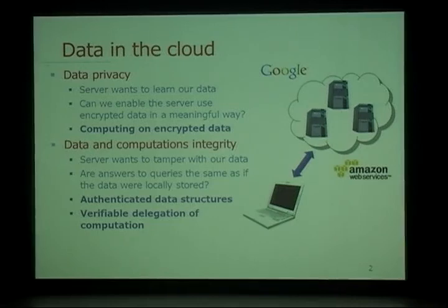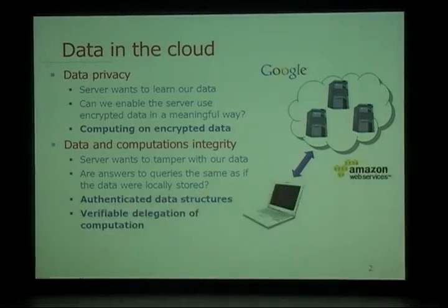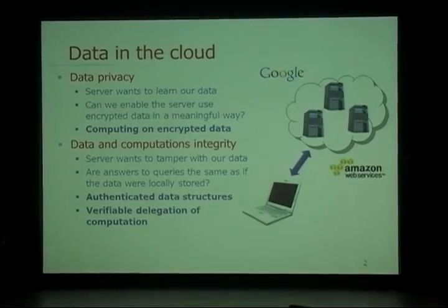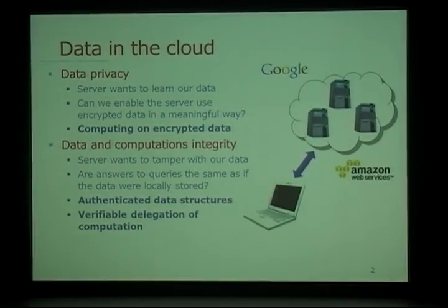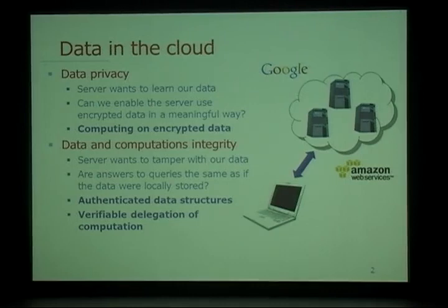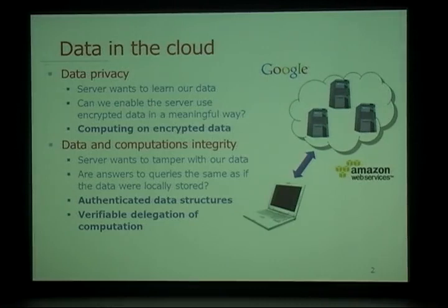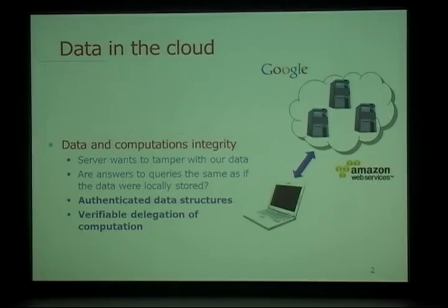We know that when we put our data online, a malicious server might want to tamper with our data. We would like some guarantees that the answers we get back from the server are as if they had been computed locally — as if the data had not been tampered with or accessed by anyone else. So we want correctness guarantees on computation executed remotely by some untrusted party. To deal with these problems, we can use authenticated data structures and verifiable delegation of computation.